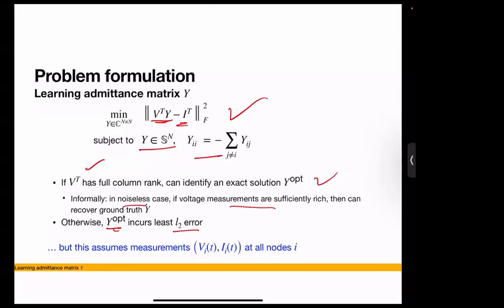I want to focus on a simpler, more practical problem. This formulation assumes measurement at every node, but in practice on distribution systems we usually do not have that. So the question is: what can we do when we only have partial measurements?